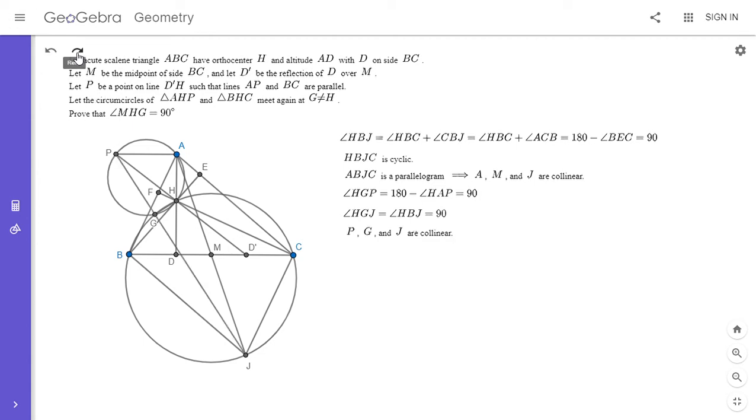Where do we go from here? We haven't used yet the fact that D prime is the reflection of D over M, so we have to use that somehow. Here's going to be my strategy: ultimately we want to show that angle MHG is 90 degrees. We know that HG is perpendicular to PJ from the information above, so essentially we want to show that MH is parallel to PJ.